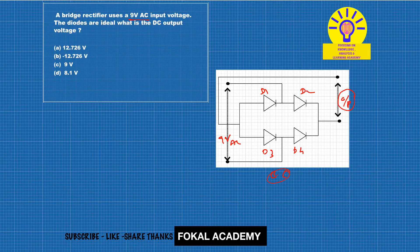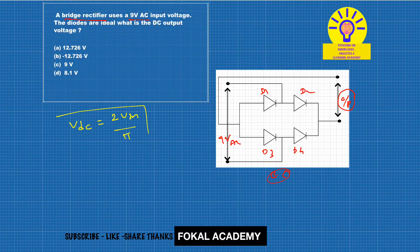What is the output voltage for the given bridge rectifier? We know that the output DC voltage is equal to 2Vm by pi. This is the standard formula for bridge rectifier.